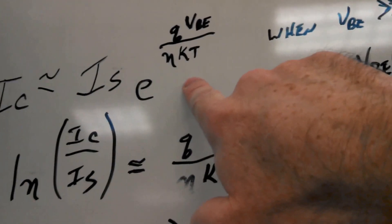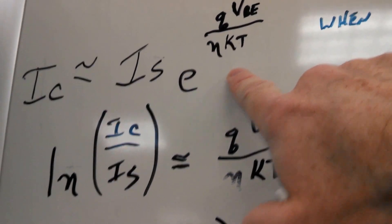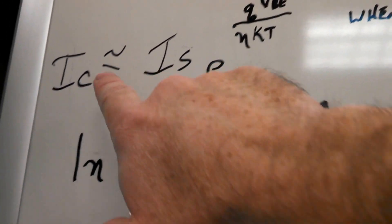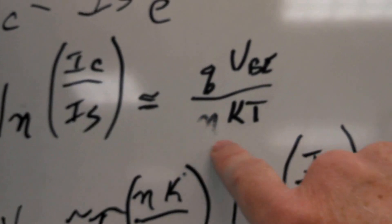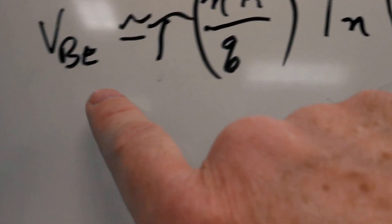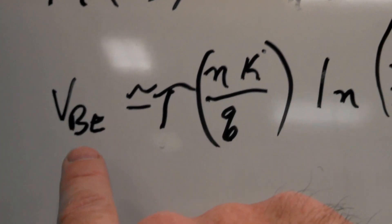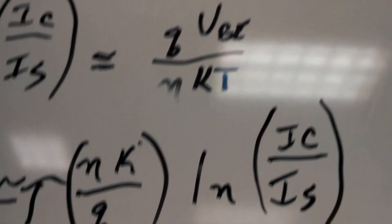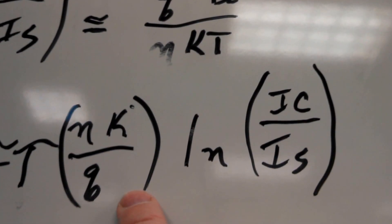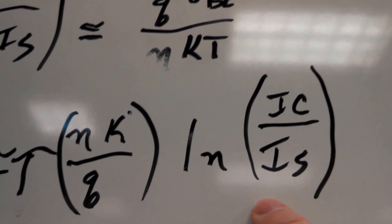So I can assume this. So IC over IS is equal to E to this. Take the natural log of both sides, I get that. And do some machinations with the math, and I see that VBE is equal to the absolute temperature times this constant times this thing.